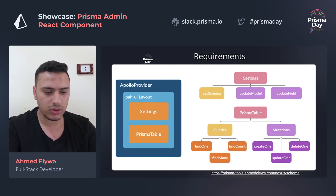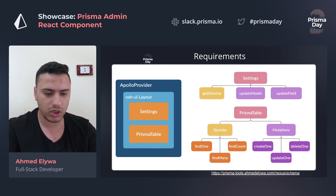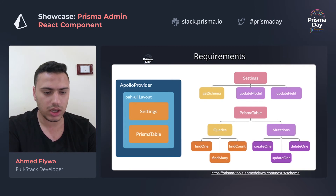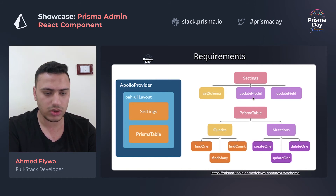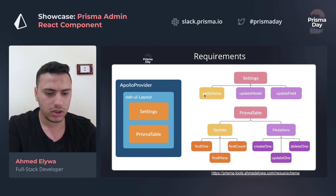Let's discuss the requirements of the component. First, we must put this React component inside an Apollo provider so it can send queries and mutations to our backend. We also need to put it inside a Chakra UI component for the styling to work properly. Second, in our backend we must have a specific list of queries and mutations. The settings component requires one query — get schema — and two mutations: update model and update fields, to update the schema.